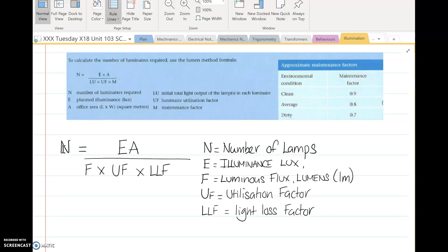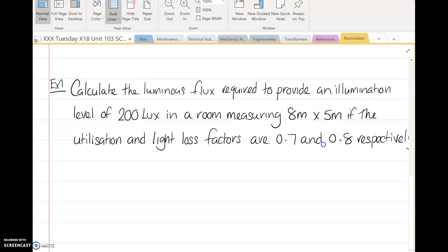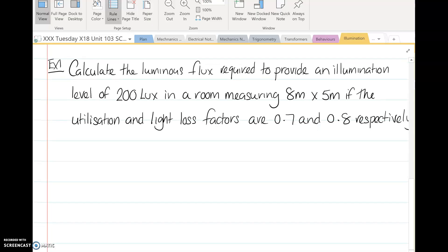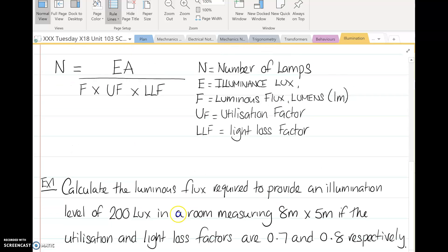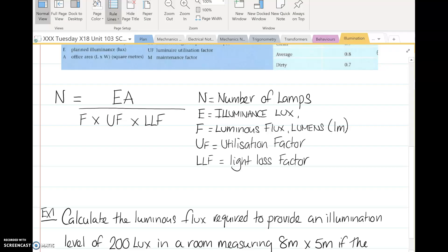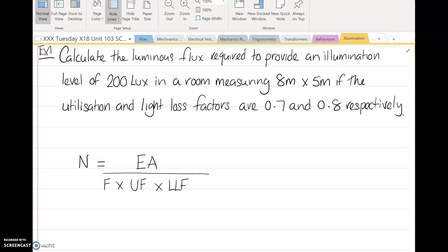So let's look at an example. We're going to calculate luminous flux required to illuminate a level of 200 lux on the surface in a room measuring 8 metres by 5 metres. First thing we need to do is get this formula here, and then we need to rearrange the formula. N is the number of lights, E is the illuminance, A is the area, F is the light output in lumens, that's the utilisation factor, and that is the light loss factor, also known as the maintenance factor.